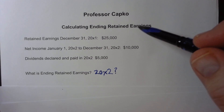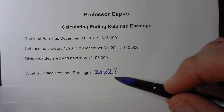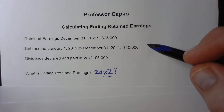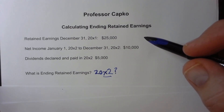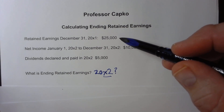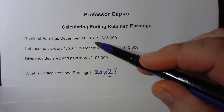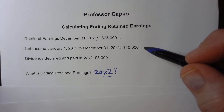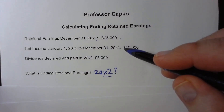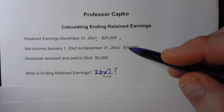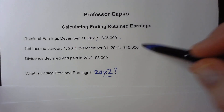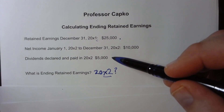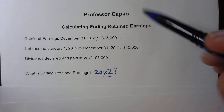In this case we're trying to calculate the retained earnings for the year ending in two. We look at the retained earnings at the end of last year, the year ending in one, which is $25,000. The net income for the year ending in two is $10,000, and dividends paid out this year is $5,000.